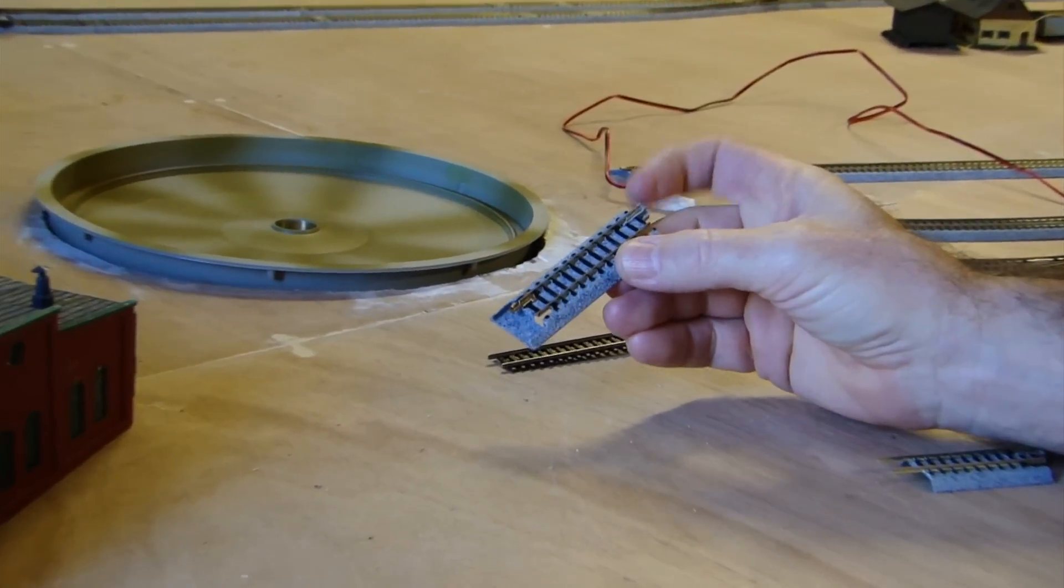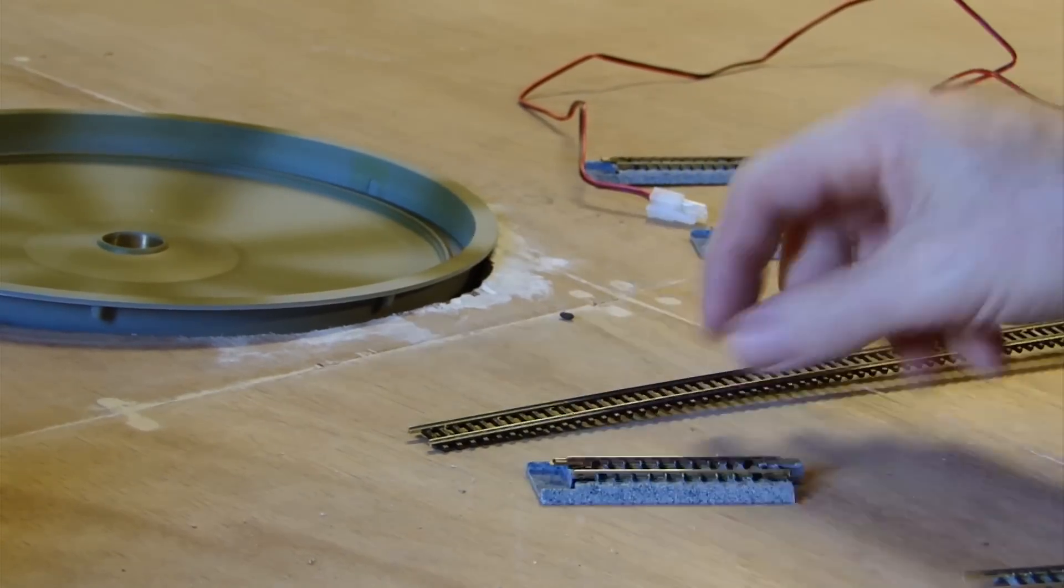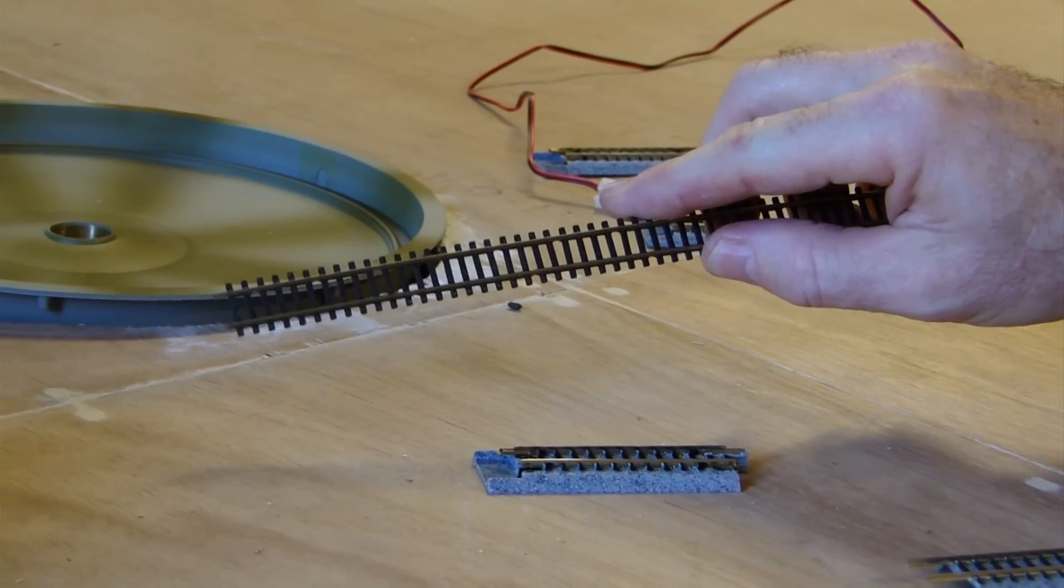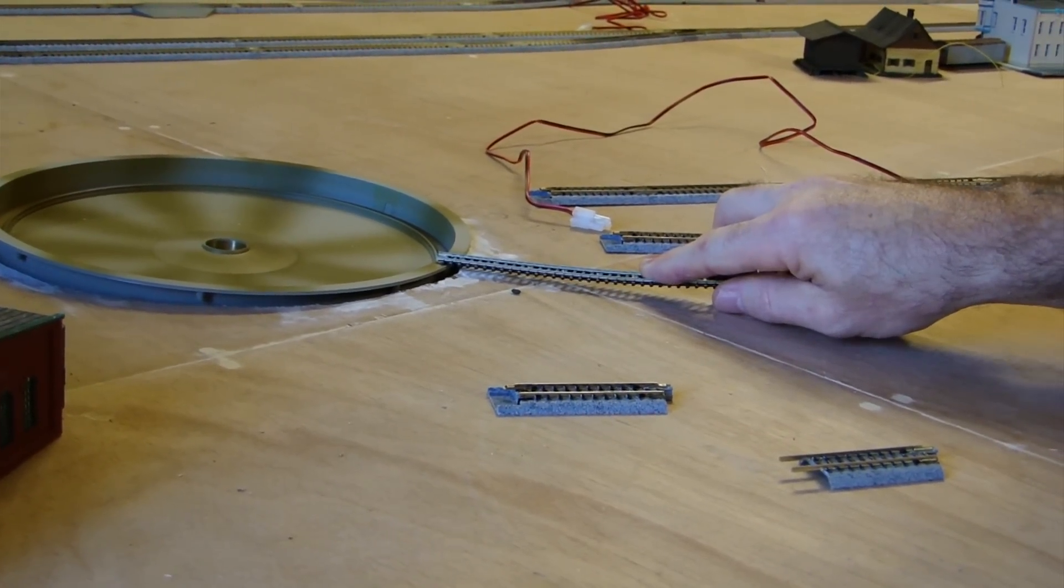And the idea is that one side of this attaches to your Kato Unitrack and the other side here connects to your flex track. You then cut your flex track to size and put it up onto your turntable like that.